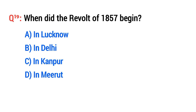Question number nineteen: Where did the Revolt of 1857 begin? The right option is D: Meerut.